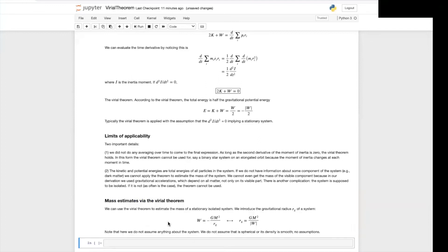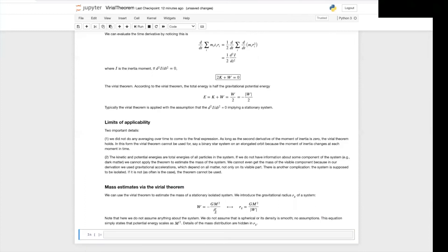Note that in this definition, there is no assumption about the system. We're not assuming that it's spherical or that the density is smooth. This equation is simply stating that the potential energy is scaling as m squared. And any detail about the mass distribution is hidden in the gravitational radius.